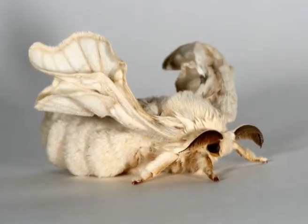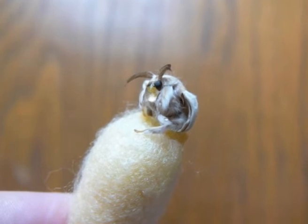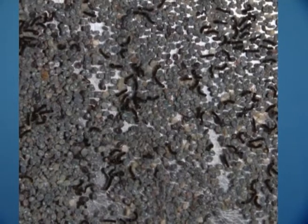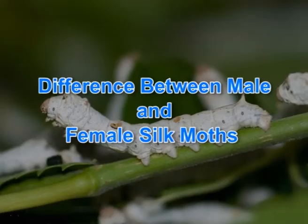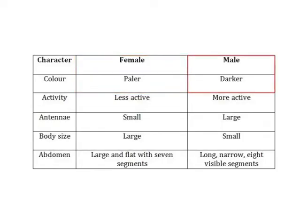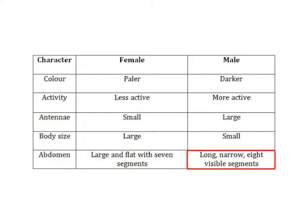At the caudal end, the male moth has a pair of hooks known as harps, whereas the female moth has a knob-like projection with sensory hairs. The female moth is paler but the male moth is darker. The female is less active, male is more active. Antennae are small in the female and larger in the male. Body size is larger in the female and smaller in the male. The abdomen is large and flat with 7 segments in the female, but long and narrow with 8 visible segments in the male.